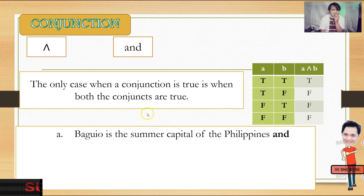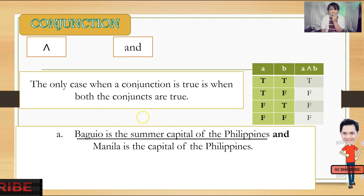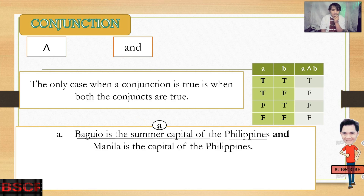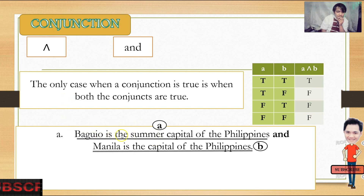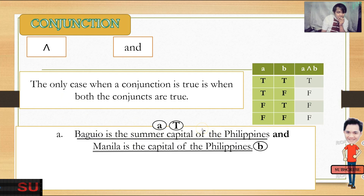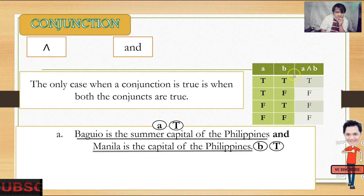Example: 'Baguio is the summer capital of the Philippines and Manila is the capital of the Philippines.' A is 'Baguio is the summer capital' — that is true. B is 'Manila is the capital of the Philippines' — that is true. Since A is true and B is true, our truth value is true.